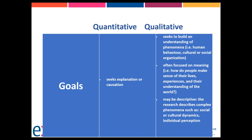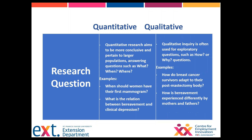Qualitative research may be descriptive — one of the interesting things about ethnographies is that they often read like a story. We call this narrative research. The research describes complex phenomena such as social or cultural dynamics and individual perceptions. It digs deeper and tells the story of people's lives through their own lens. We often talk about 'first voice' — letting the people experiencing something tell their own stories, because they are the subject matter experts.